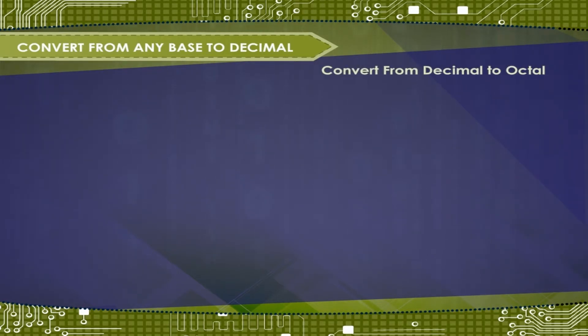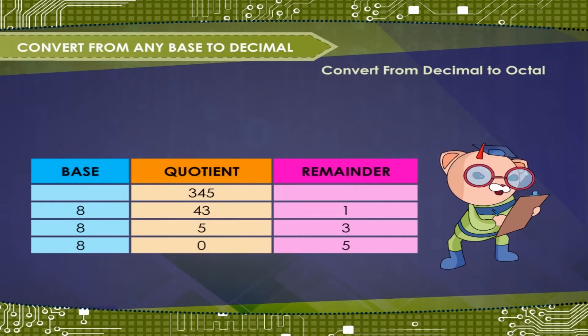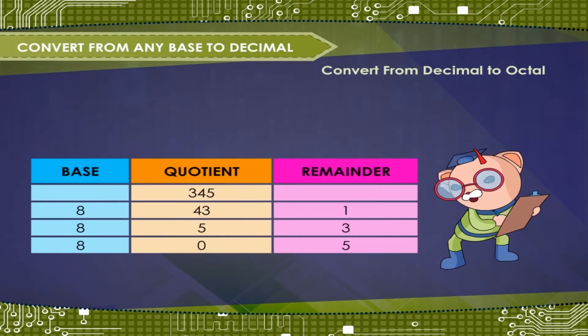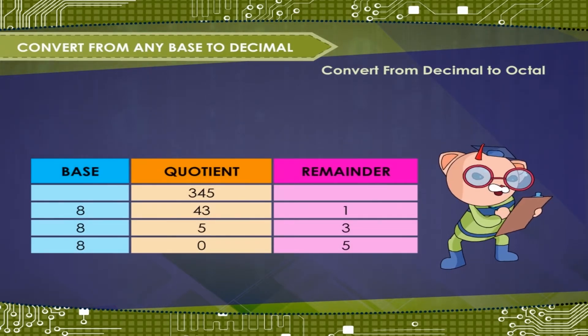Convert from decimal to octal. Now express the same decimal number 345 in octal notation.